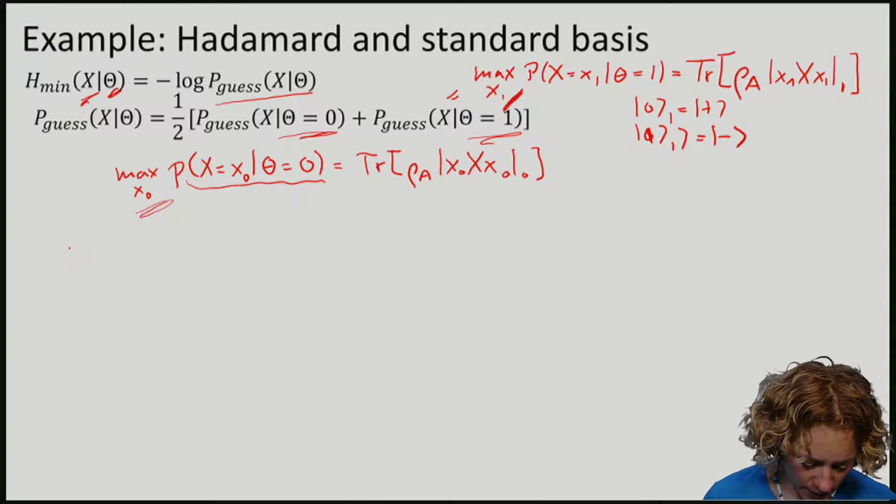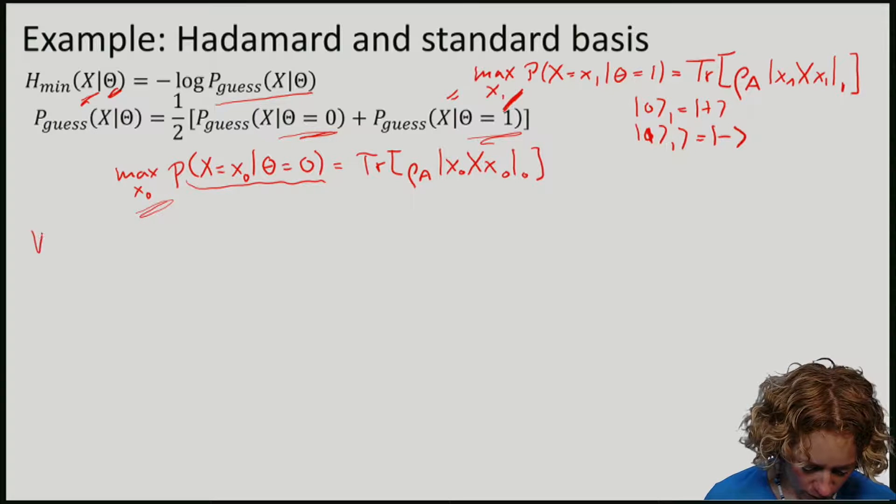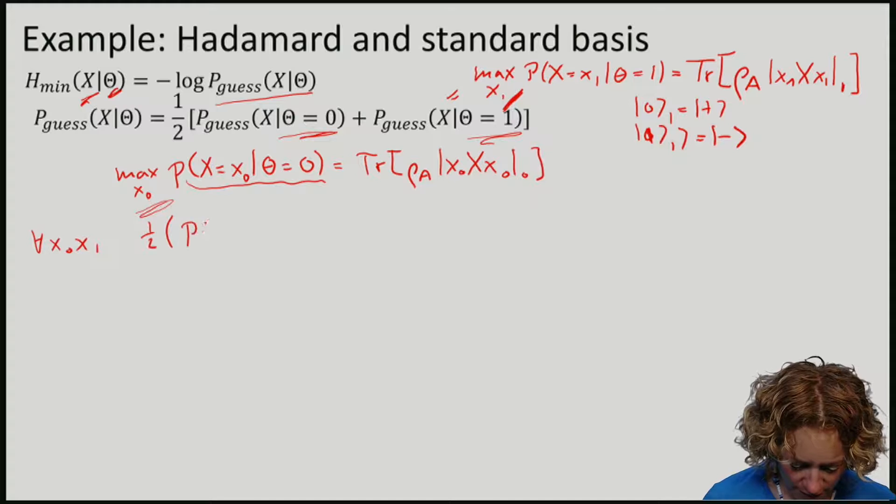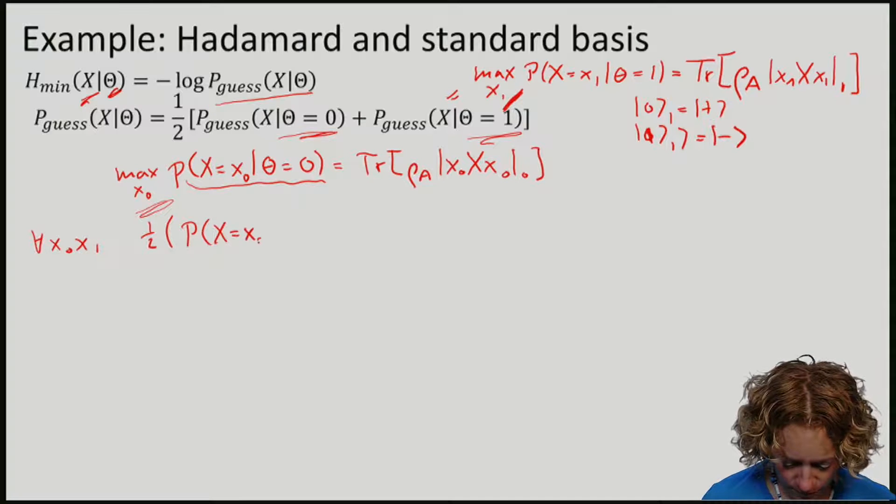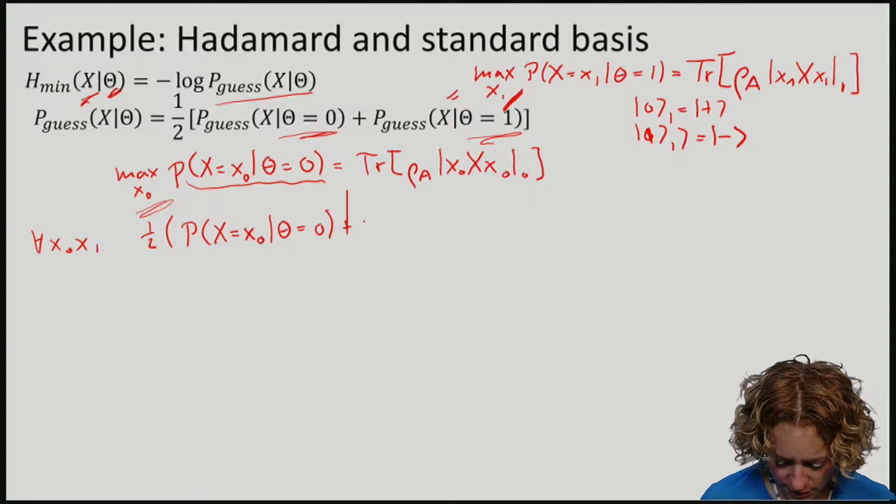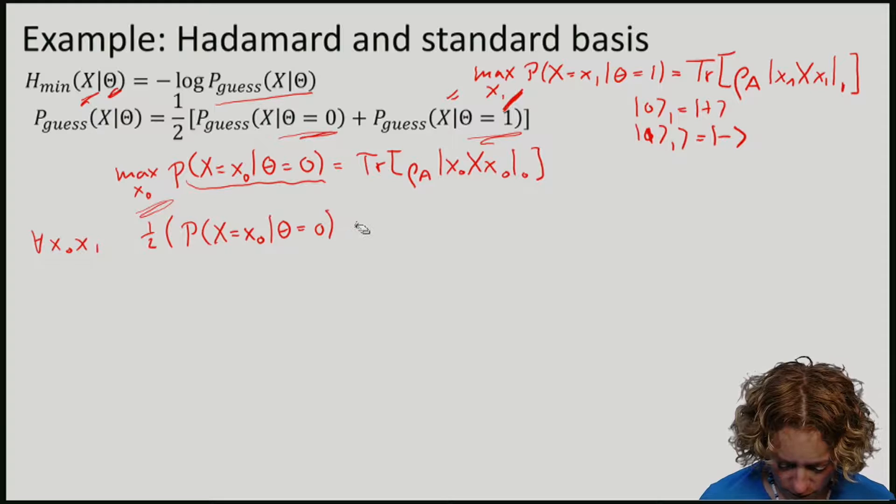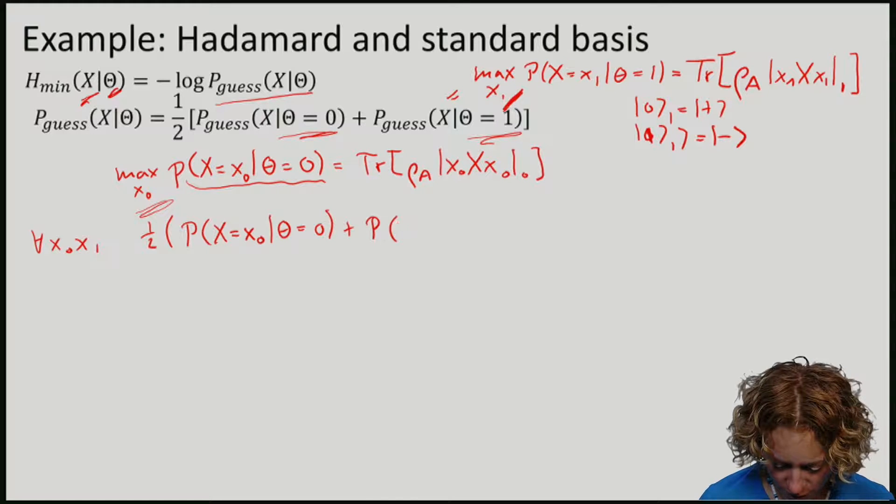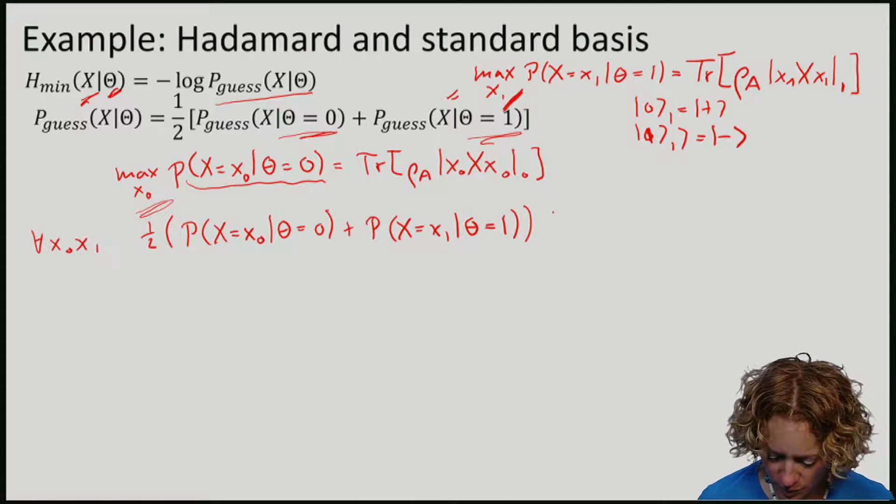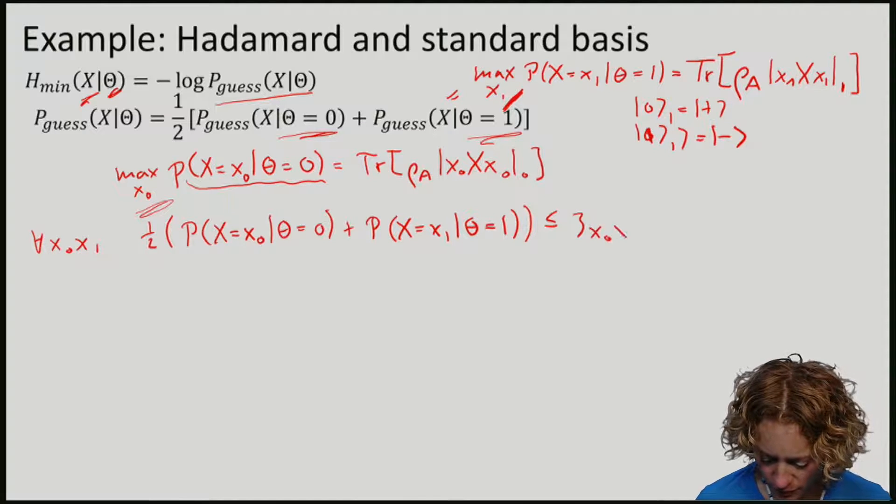We will consider the average of the probability of obtaining outcome X0 if basis was 0, plus the probability of getting outcome 1 if theta was 1. So this is upper bounded by some number, which I'll call zeta, which of course might depend on X0 and X1.